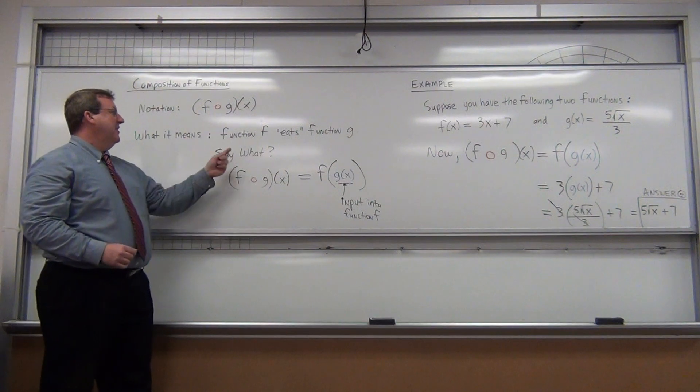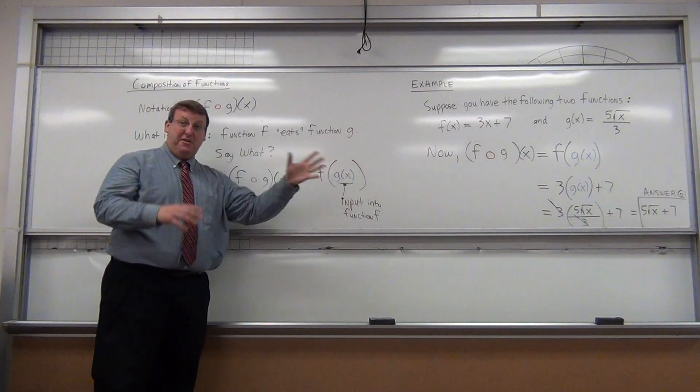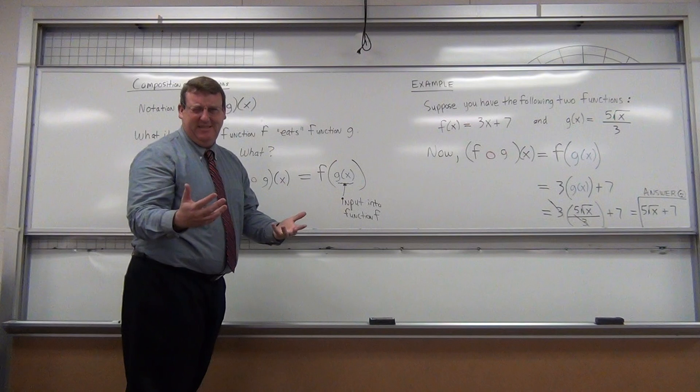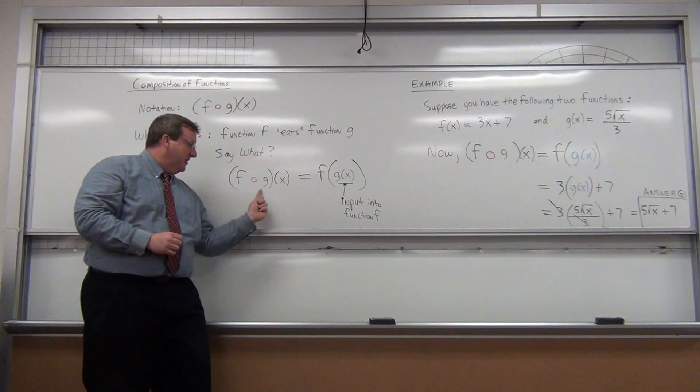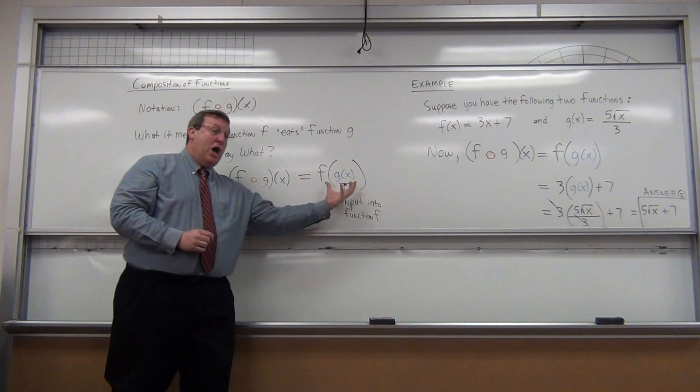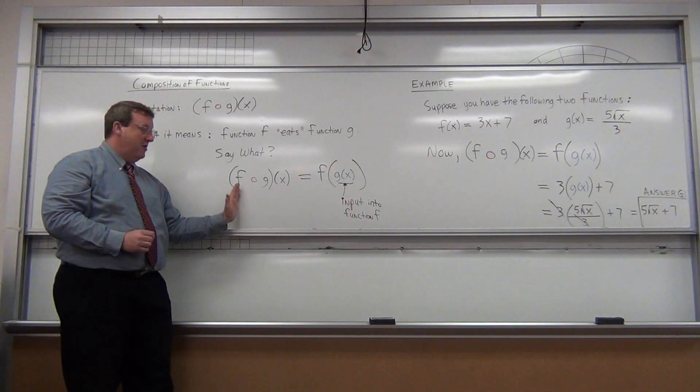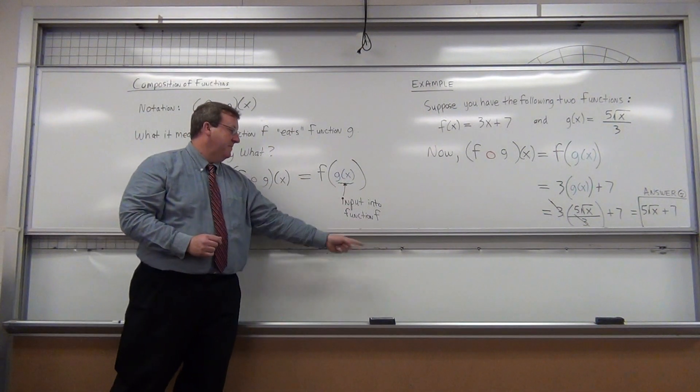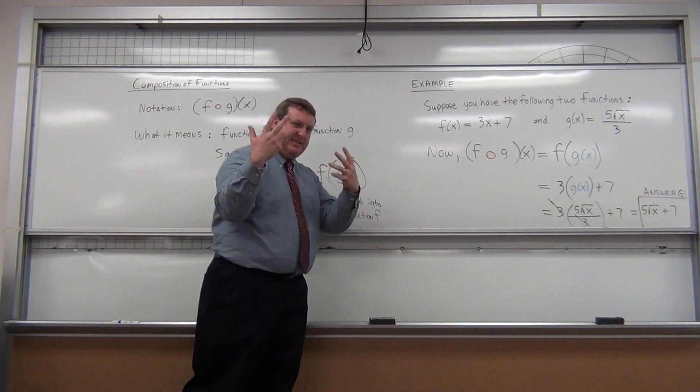What it means is one of these functions, particularly the one on the left side, quote, eats the other function. What's another way? Say what? I don't blame you. Like, what do you mean a function eats another function? Well, what it really means is that the function on the right side of the composition symbol, the circle, becomes the input. So, the function on the left, f, will eat up, look at the o like a mouth, eat up g of x. So, g of x becomes the input to the function f. So, let's look at an example so you can visually see it.